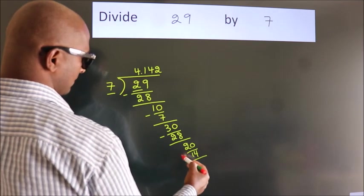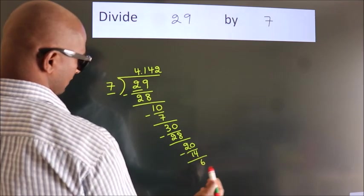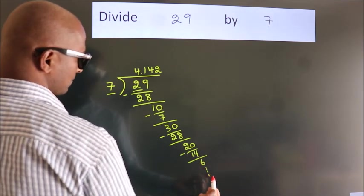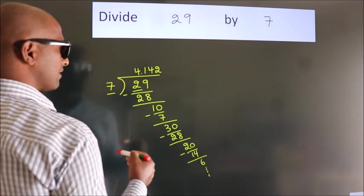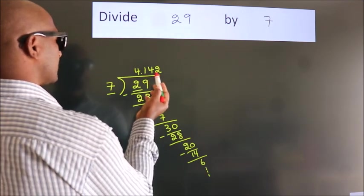Now we subtract. We get 6. And the division continues. It is enough if we do up to 3 decimal places.